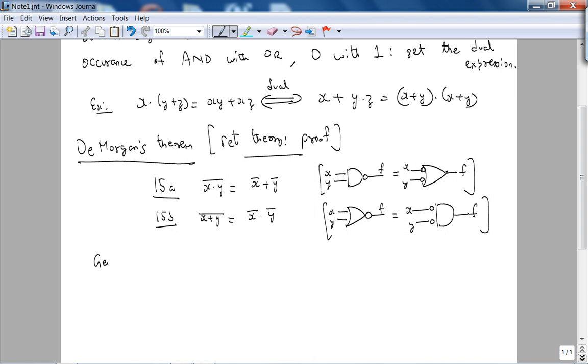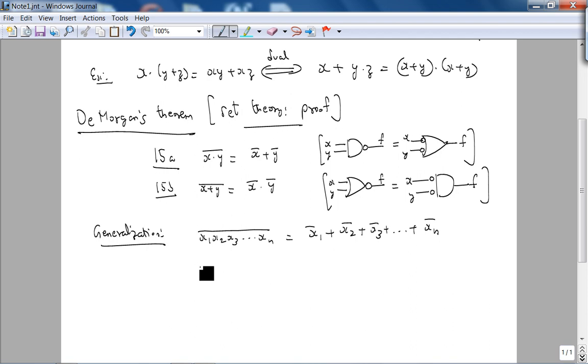But yeah, and you can generalize it. So generalizing, this generalization will be (x1 AND x2 AND x3 ... AND xn) NOT equals x1 NOT OR x2 NOT OR x3 NOT ... OR xn NOT. And consequently, (x1 OR x2 OR ... OR xn) NOT equals x1 NOT AND x2 NOT ... AND xn NOT. That's a very powerful result.